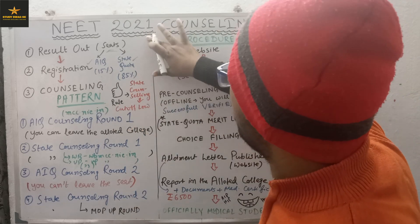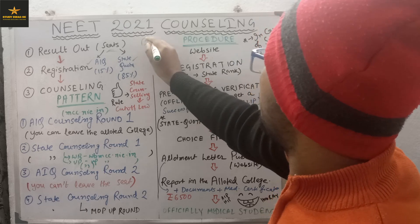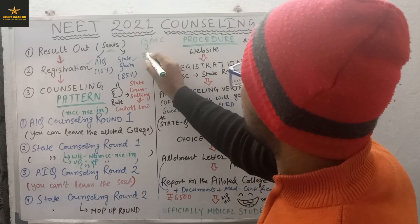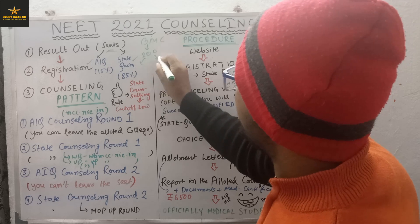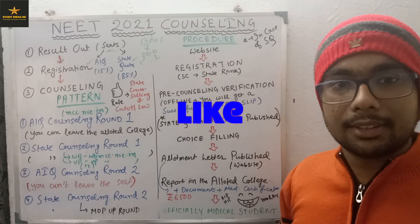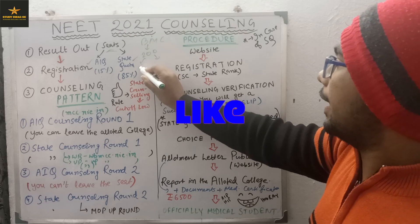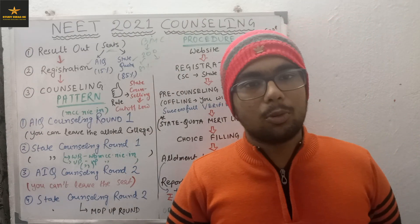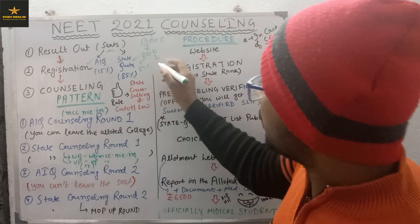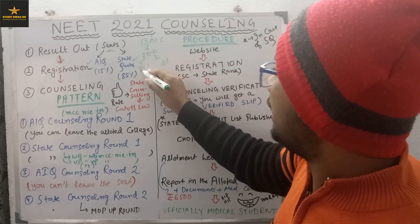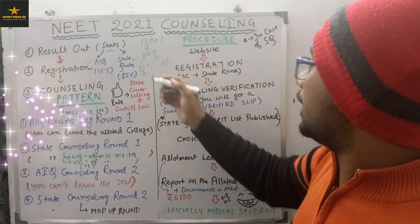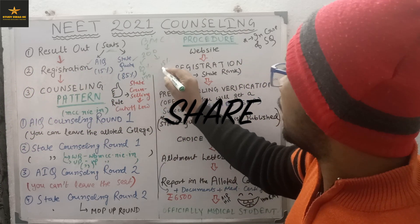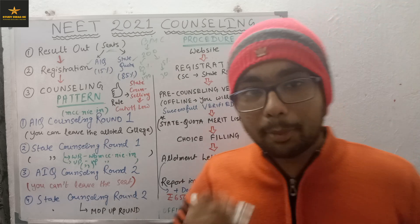For example, suppose I am studying at Burdwan Medical College (BMC). BMC has 200 seats. Out of 200 seats, 85% is for State Quota — meaning people from West Bengal — and 15% is for All India Quota. So 85% of 200 is 170 seats for State Quota and 30 seats for All India Quota.